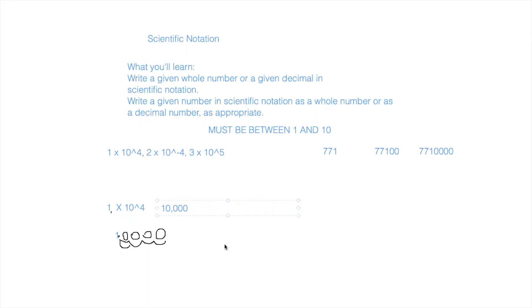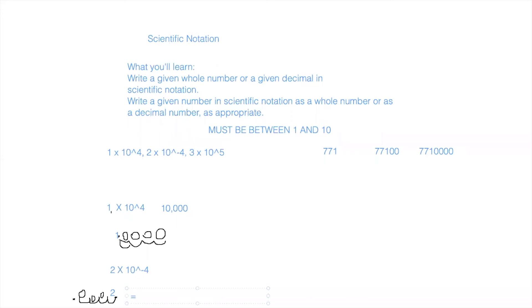For 2 times 10 to the negative fourth power, since the exponent is negative we go to the left instead of the right. We pretend there's an invisible decimal point to the right of the 2 and move it over four times to the left: one, two, three, four. Each dip gets a zero, so our final answer is 0.0002.